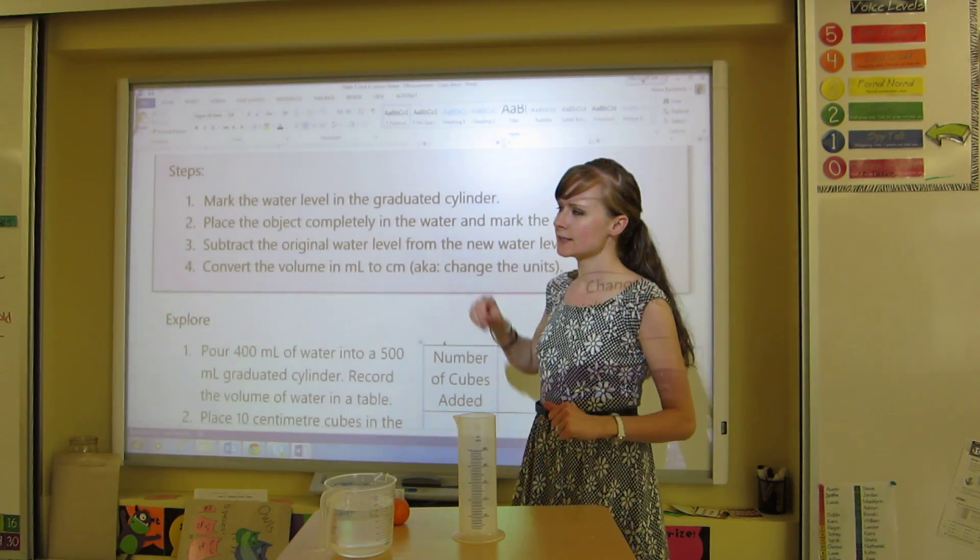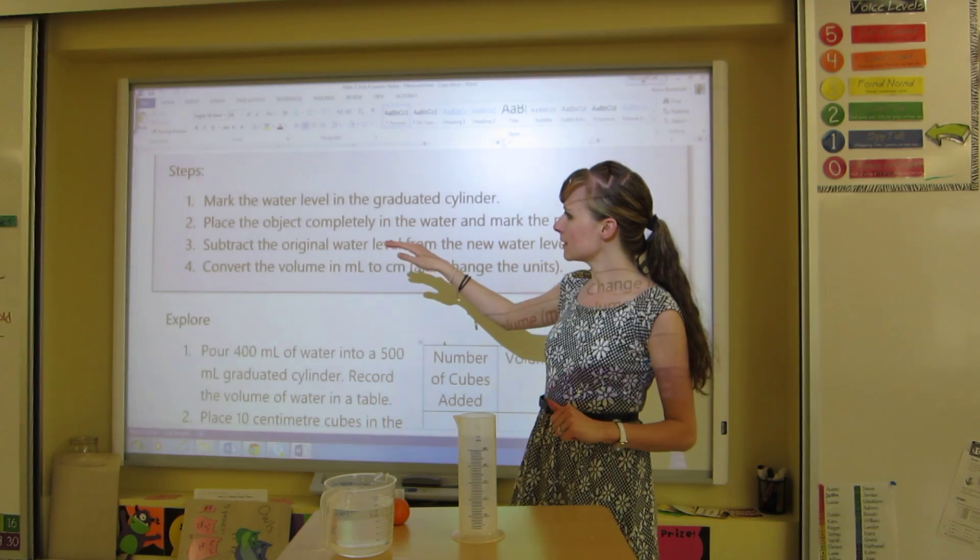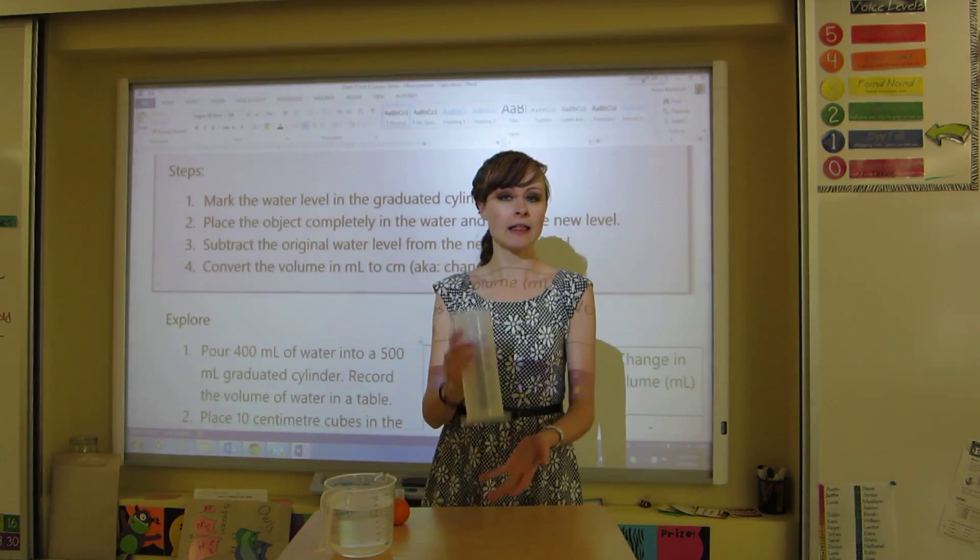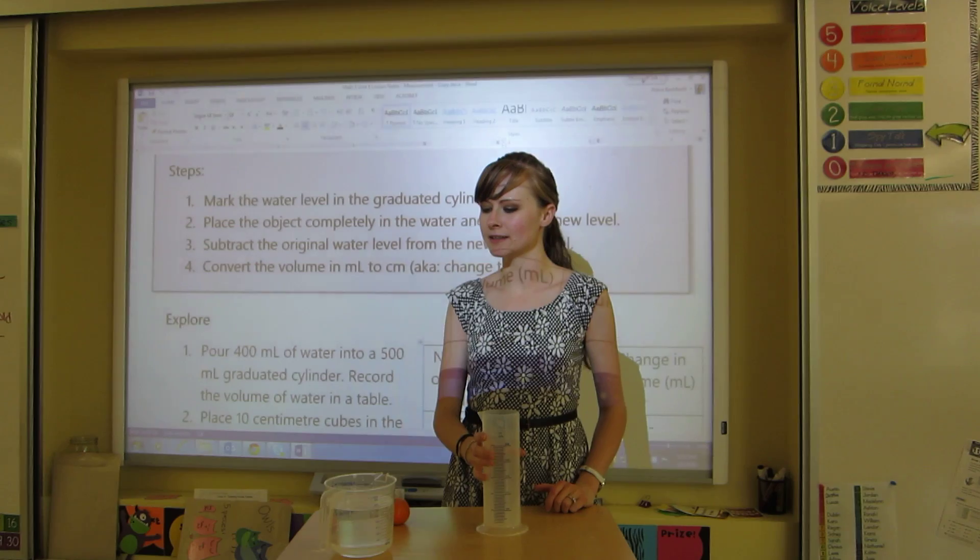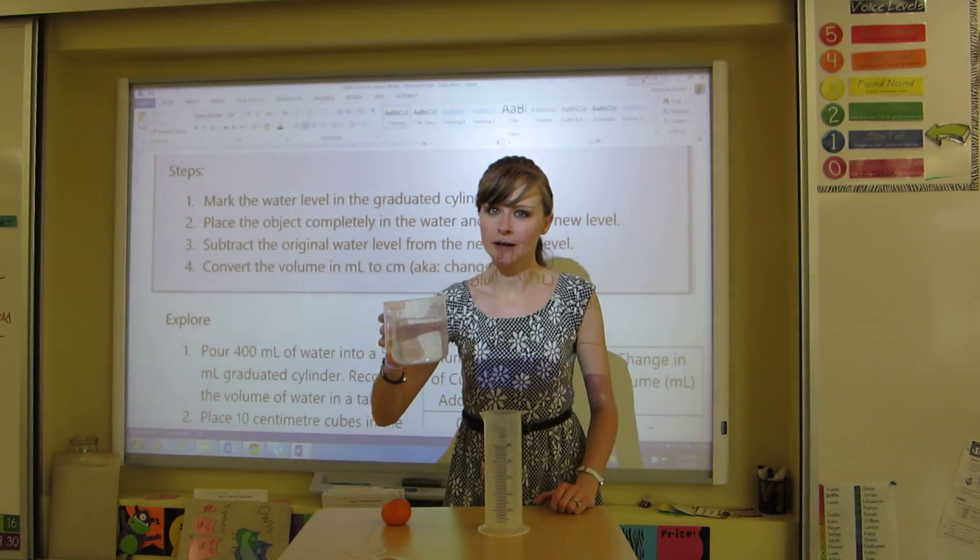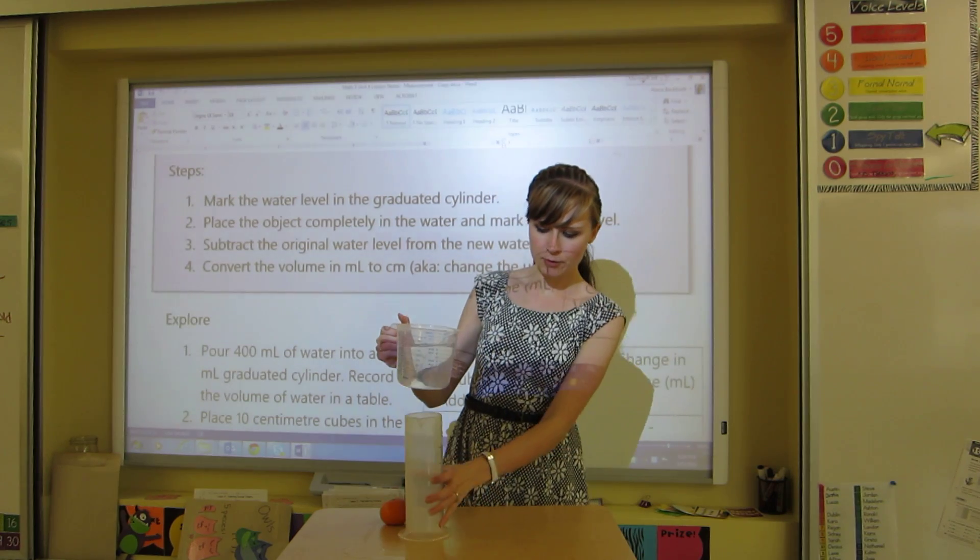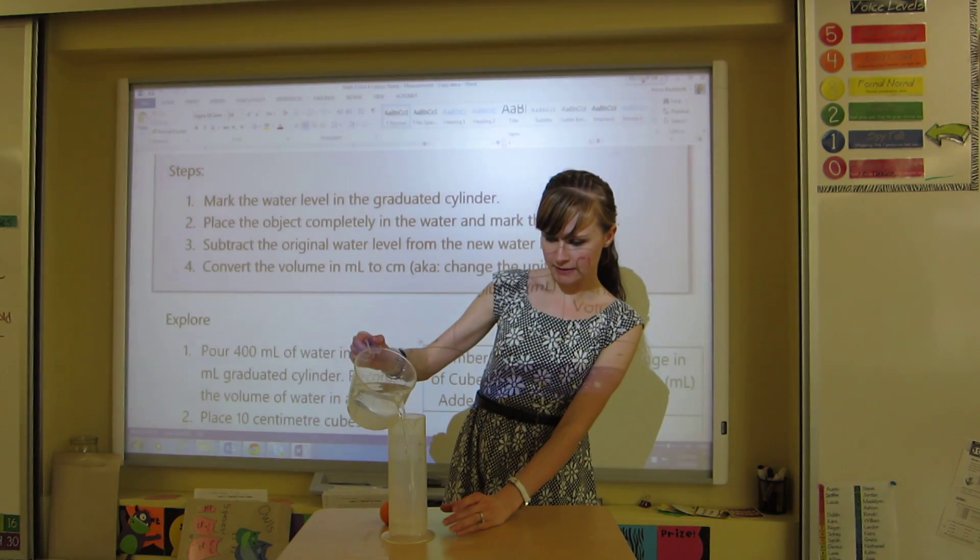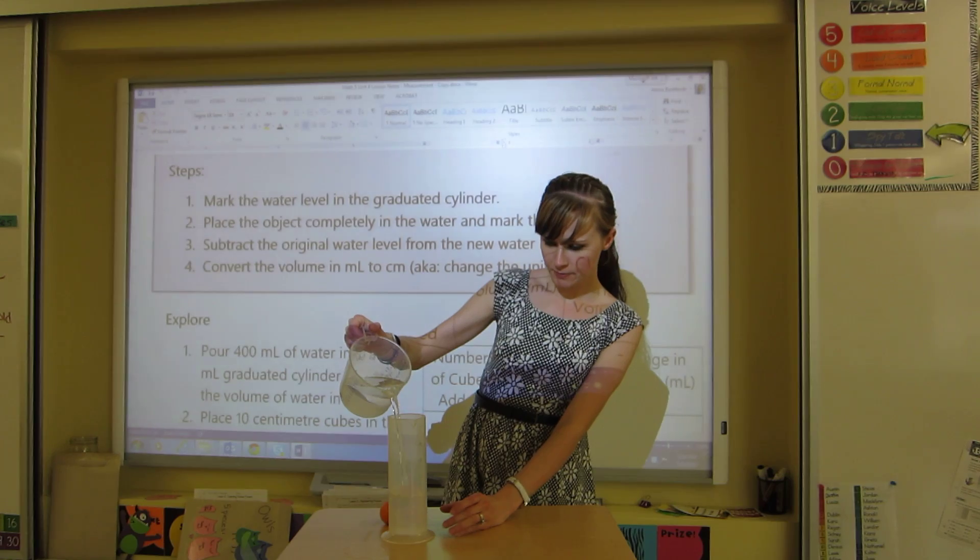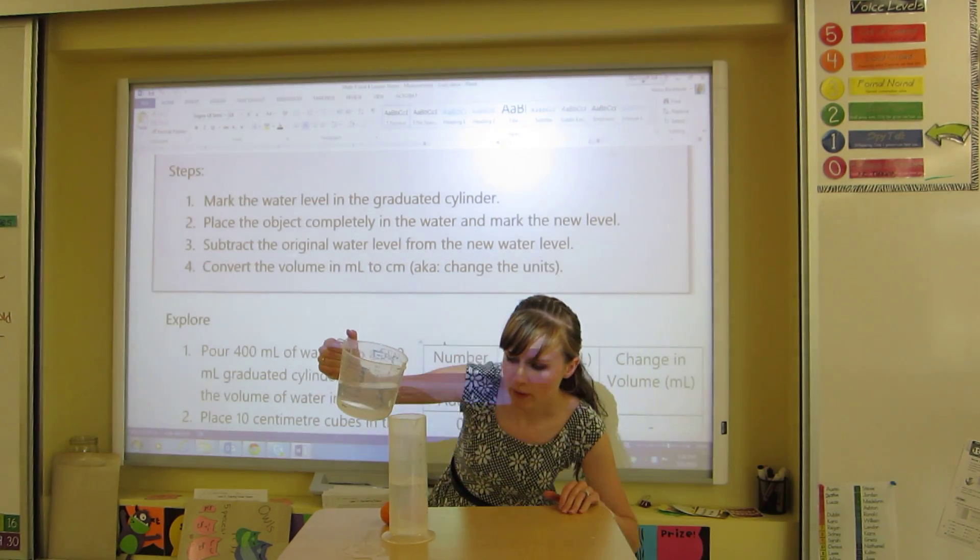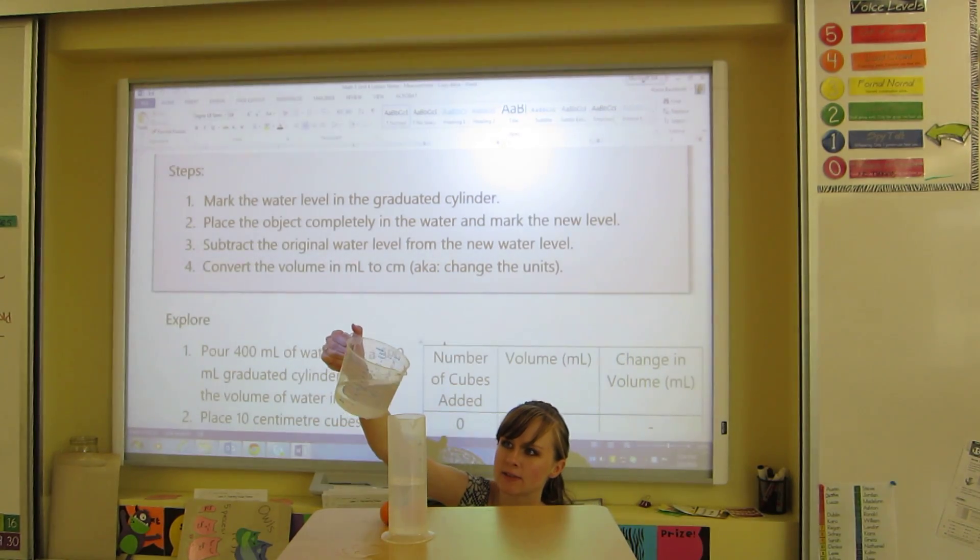So I'm going to practice using the steps. The first step is mark the water level on the graduated cylinder. This is a graduated cylinder. This is a measuring cup. It's not as accurate, so use a graduated cylinder. So I'm going to pour, let's say, 300 milliliters into my graduated cylinder. Now, when you're pouring it, you want to be exact so that you know.